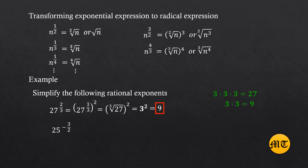Let us have another example: what if the exponent is a negative fraction? We have twenty-five raised to negative three over two. To make it easy, let us first simplify the negative exponent by transforming it into a positive exponent, by bringing down the expression as the denominator of a fraction. The expression becomes one over twenty-five raised to positive three over two. Then, factor out the exponent: one over twenty-five raised to one-half, in parentheses, raised to three.